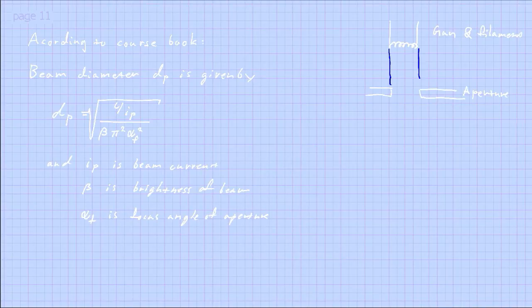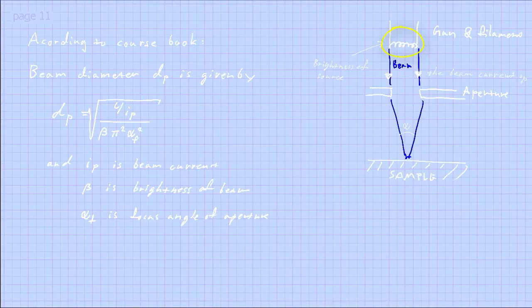The brightness of the source also governs this. Brightness is defined as the intensity of the source divided by the area creating that emission. For example, a tungsten filament is a large metallic wire that glows and emits electrons over a rather big illuminating area. A field emission unit looks more like a small needle, and electrons are emitted only from the outermost tip, so all intensity comes from a very small region. The field emission source has a brightness about 1,000 times larger than the tungsten source.